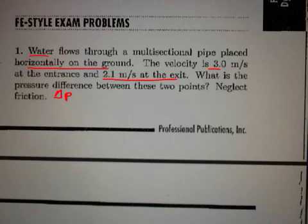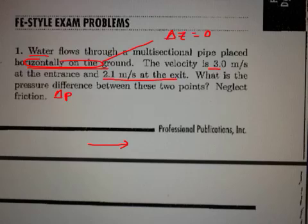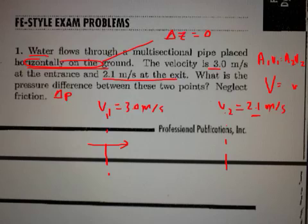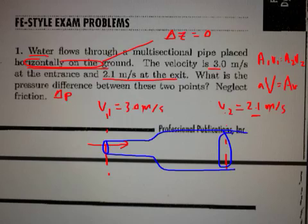There are a number of clues inside this problem. First, it's horizontal, so delta Z equals zero, meaning we can neglect gravitational contributions. We know V1 equals 3 meters per second and V2 is 2.1 meters per second. The second velocity is slower than the first. From the continuity equation, A1V1 equals A2V2, so since V2 is smaller, the cross-sectional area at point 2 must be larger — transitioning from a smaller to a larger cross-sectional area.